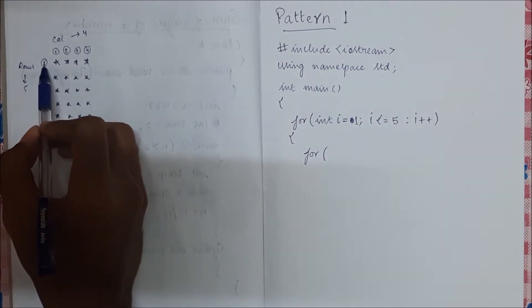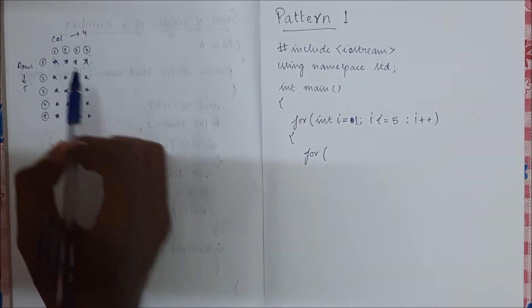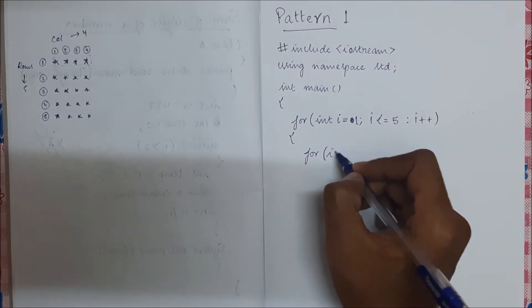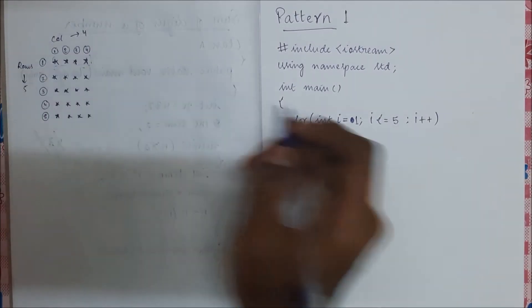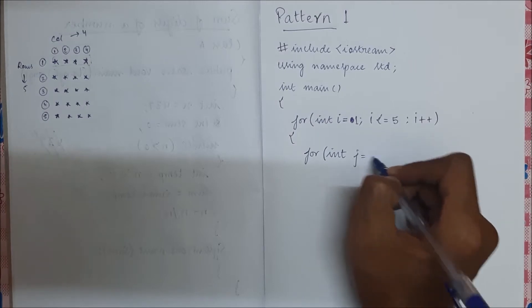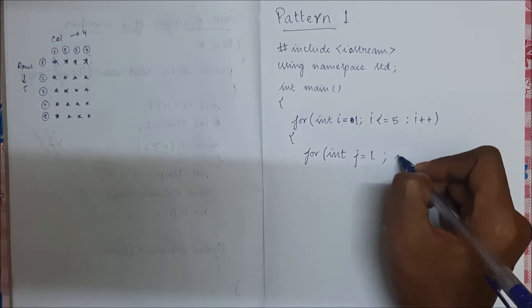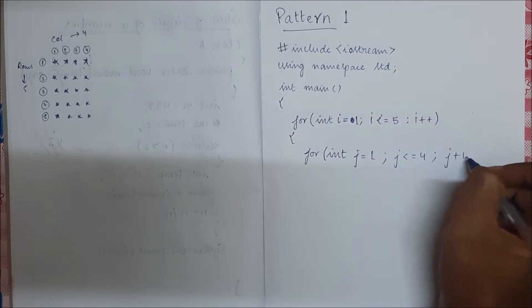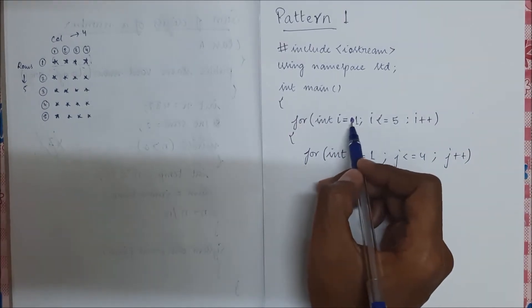So now we have written code to change the rows. Now inside this, in every row there are four columns. So for i equal to one, we need to move four times. So j equal to one, j less than equal to four, j plus plus.